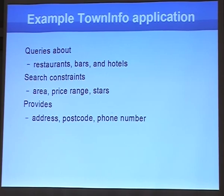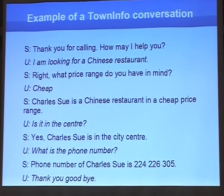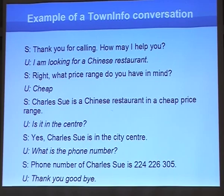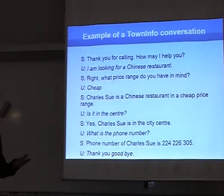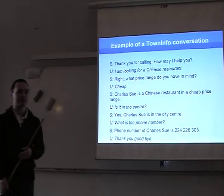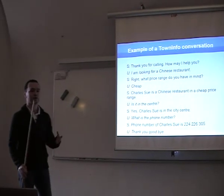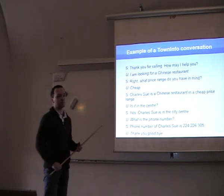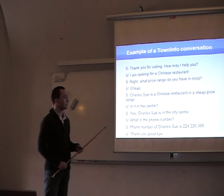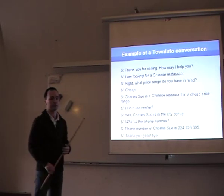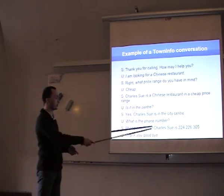It looks like a very simple system — just querying a database — but it can be a rather complex task to solve with state-of-the-art techniques. For example, the system asks how it may help, the user says they are looking for a Chinese restaurant, the system asks for more constraints such as cheap or expensive, offers a venue, confirms it is in the center, and the dialogue ends with the user asking for a phone number.